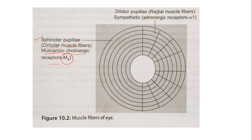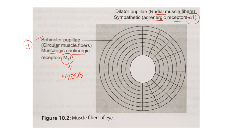Dilator pupillae is also called radial muscle fibers, innervated by the sympathetic nervous system. The receptor present on the radial muscle fiber is adrenergic, especially alpha-1. Stimulation of circular muscle fibers by the parasympathetic nervous system activates M3 receptors, causing constriction of the pupil — that is miosis. Pupillary size will decrease due to the action of M3 on the circular muscle fibers.